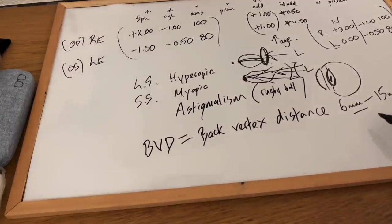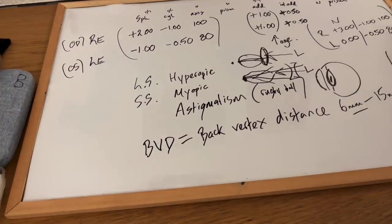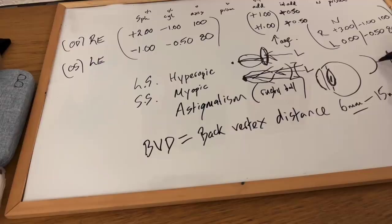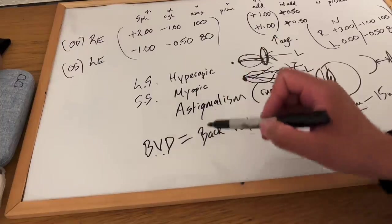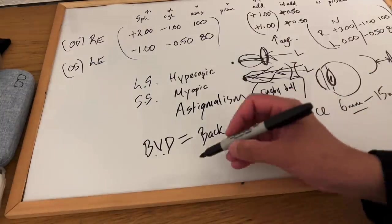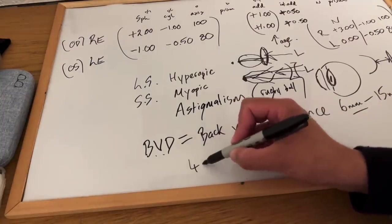So you should be able to measure that distance. That is your back vertex distance, the distance between the front of the cornea and the back of the lens that you are using. And back vertex distance is important to note in your higher prescriptions, anything beyond four to five diopters.